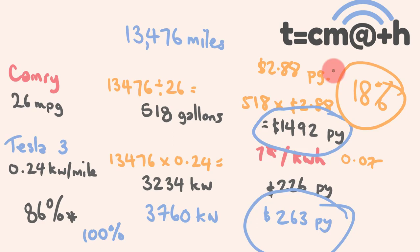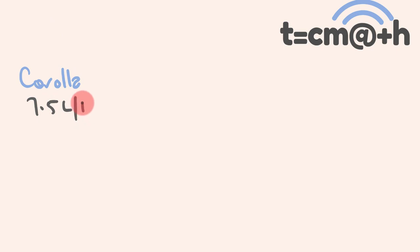So I'm now going to do an example working this out for my particular country — Australia. For an example using litres and kilometres, we're going to consider two types of vehicles. The petrol vehicle is the Corolla, which gets 7.5 litres per 100 kilometres — a fairly common way to express fuel consumption.